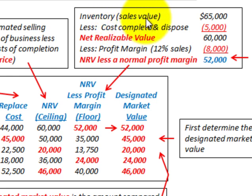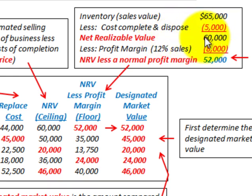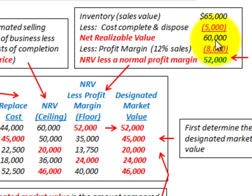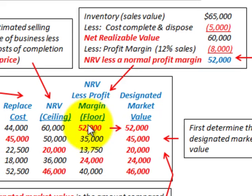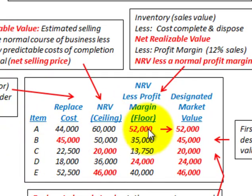For example, your inventory sales value is $65,000. Subtract any cost to complete or dispose of this inventory — $5,000 in this example — giving you a net realizable value of $60,000. Then subtract any profit margin, say 12% of sales value, which is $8,000. Subtracting from the $60,000 NRV gives you net realizable value less the normal profit margin of $52,000. That's how you calculate this floor amount, and you can see item A was $52,000.